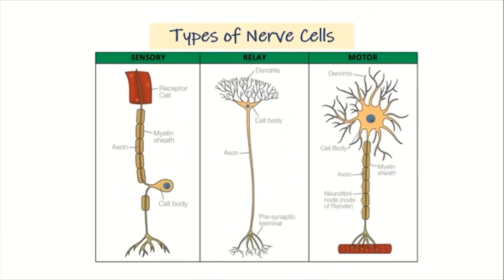Now, lastly, we have the different types of nerve cells: the sensory neurons, the relay or intermediate neurons, and the motor neurons. The sensory neurons are responsible for receiving the signal, the relay neurons pass on the signal, and the motor neurons act on the electrical or chemical impulse sent from your senses.